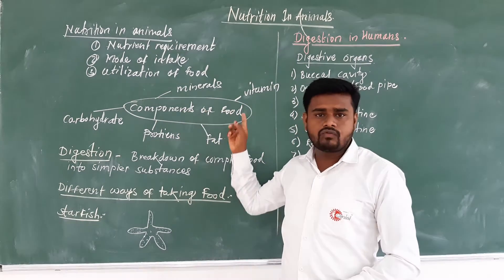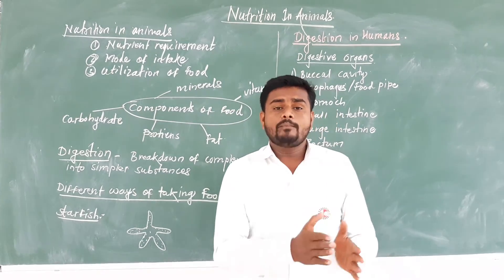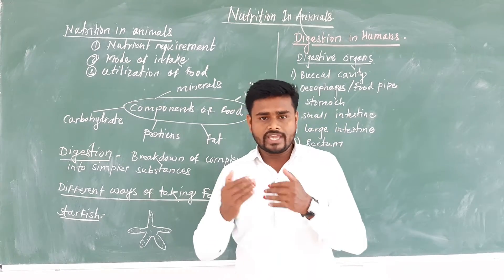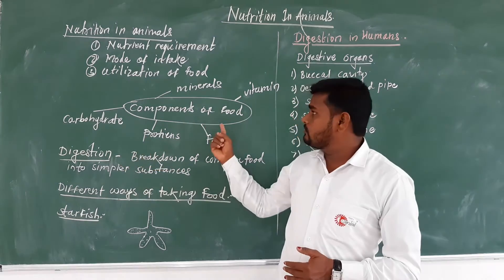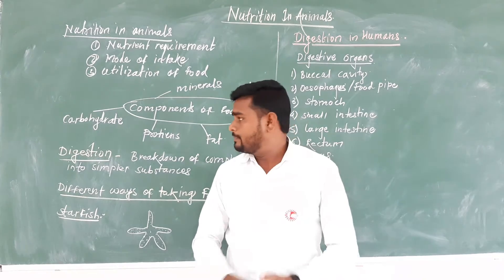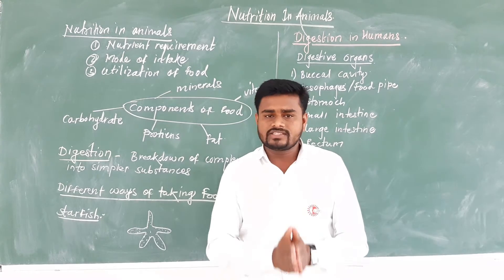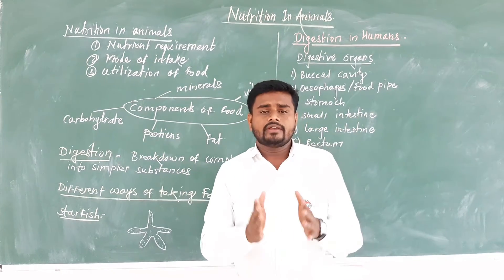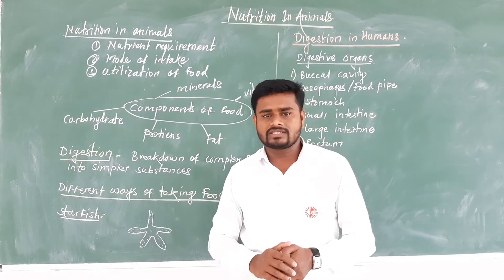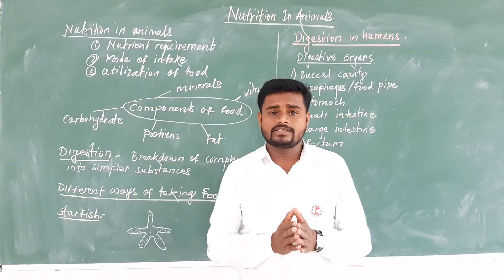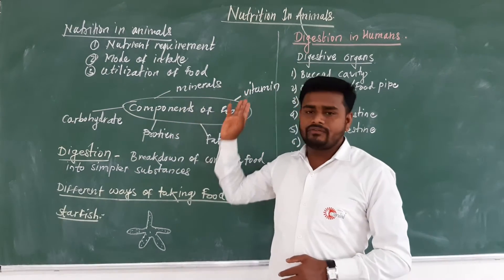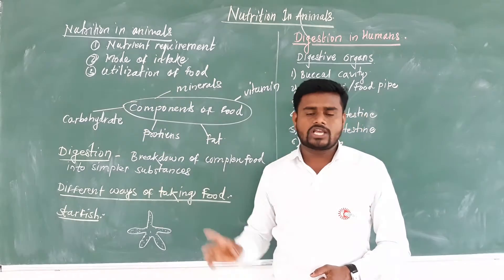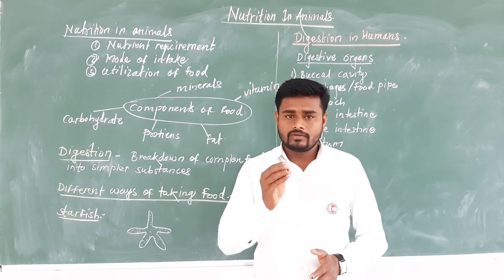The next point: the components of food. In the previous standard, we have seen that there are several components of food. There are mainly five components present in food substances. First, carbohydrate — present in all cereals and it is the main source of energy. Then proteins — present in milk, milk products, etc. Then fat — all oily and fatty food substances have fat. And minerals and vitamins — vegetables and fruits are rich sources of vitamins and minerals. All these food components are very important for the production of energy.